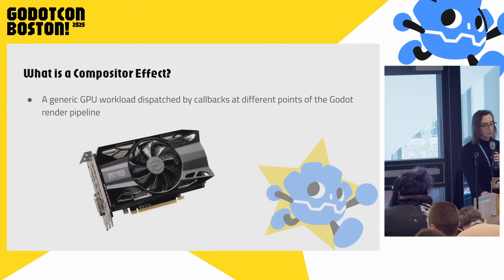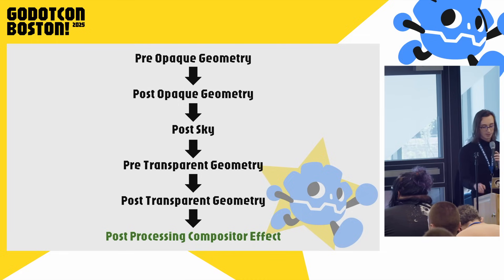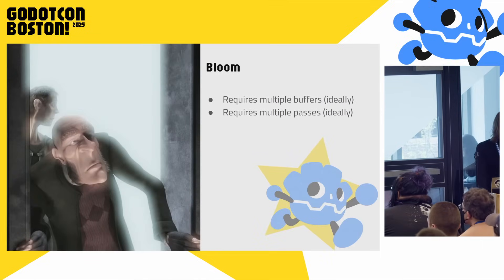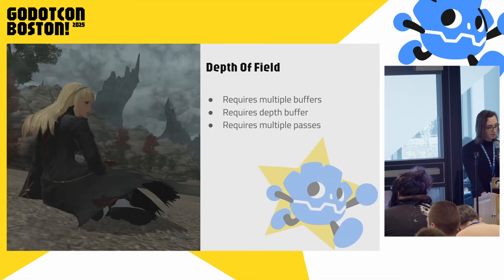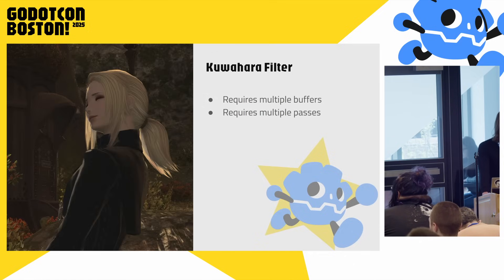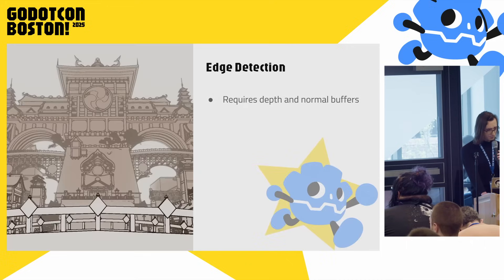Because compositor effects can execute any GPU workload we want at any point of the Godot rendering pipeline. So if we look at these five flags and we just tack a post-processing compositor effect onto the end, then we have a post-processing effect — pretty simple. With those restrictions lifted, all the advanced post-processing effects are now on the table: screen-space ambient occlusion, bloom, depth of field — I put before and afters for that one — the Kuwahara filter, difference of Gaussians for stylization, and various edge detection effects are possible as well with compositor effects.